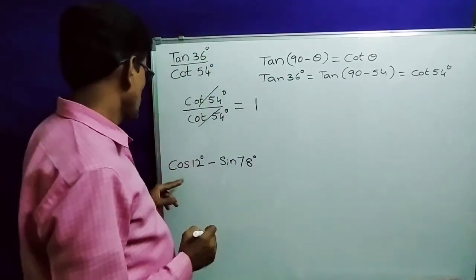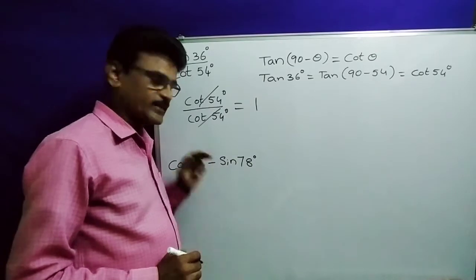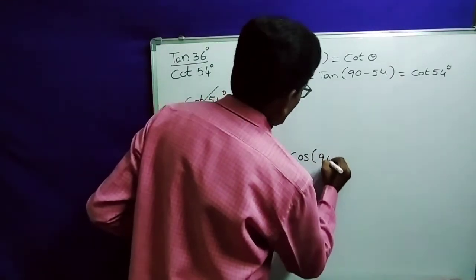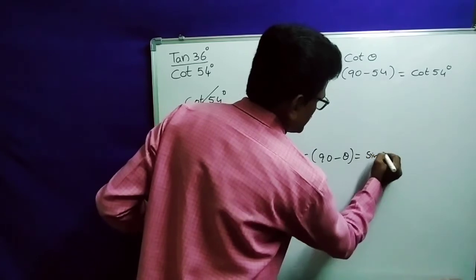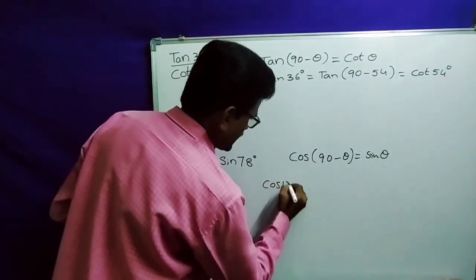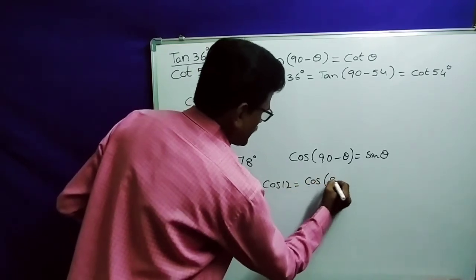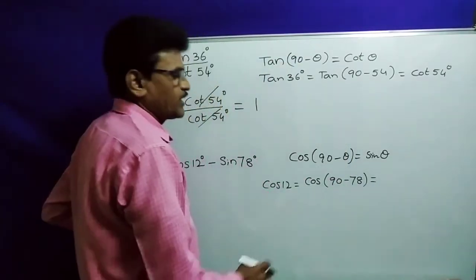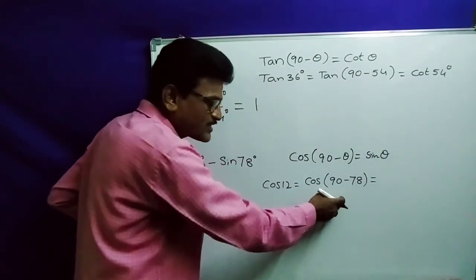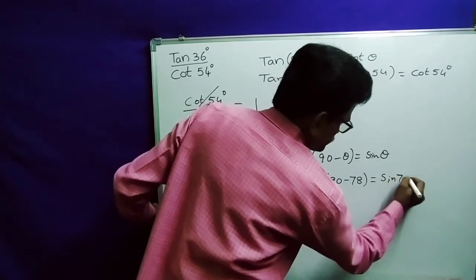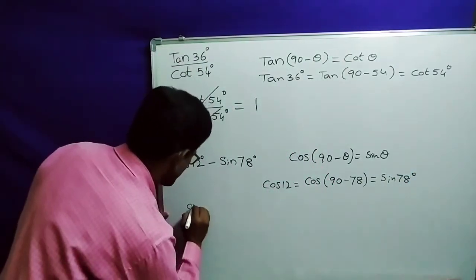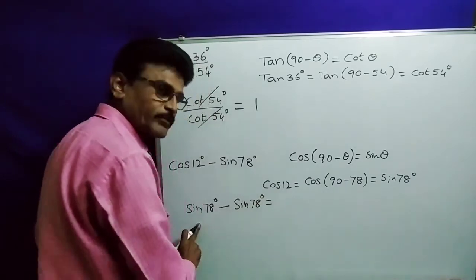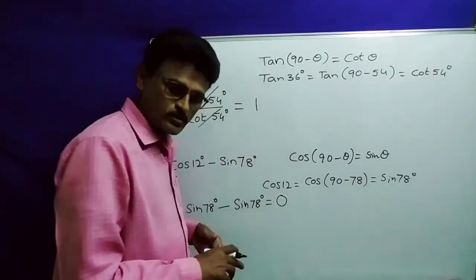Now: cos 12 degrees minus sin 78 degrees. We have to convert cos into sine or sine into cos. We know cos(90 minus theta) is sine theta. So cos 12 I am writing as cos(90 minus 78), and cos(90 minus 78) is sine 78. So cos 12 becomes sine 78 degrees, minus sine 78 degrees — sine 78 minus sine 78 gives us answer 0.